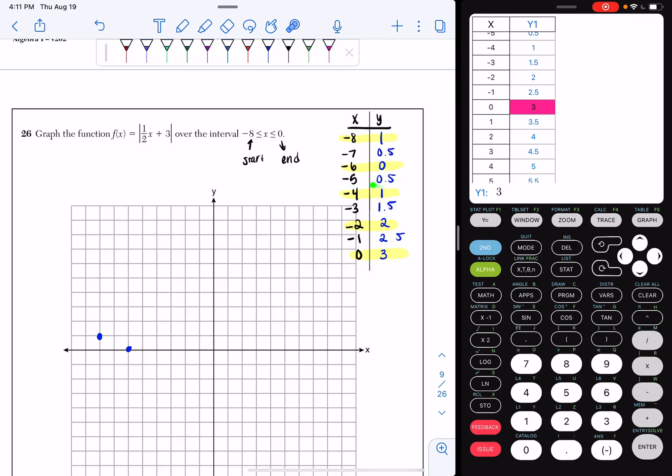Now I'm gonna go out 4 and up 1. So 1, 2, 3, 4, and then up 1. Now I'm gonna go out 2 and up 2, so 1, 2, 1, 2, plot a point right there.